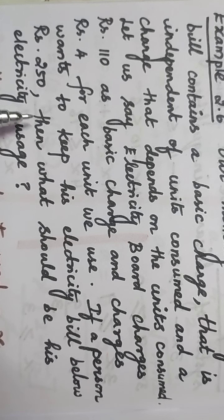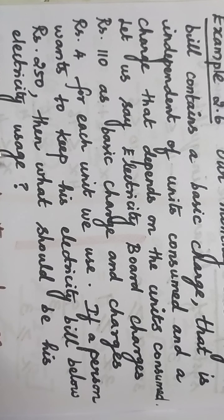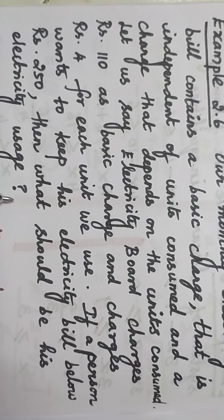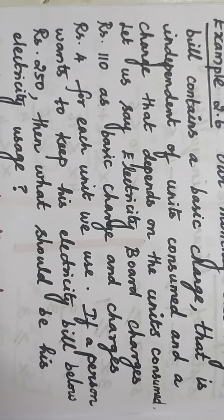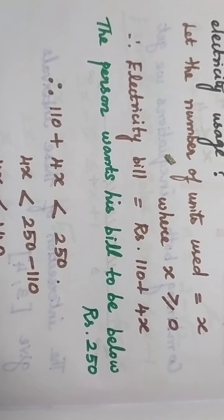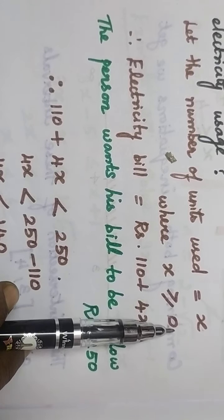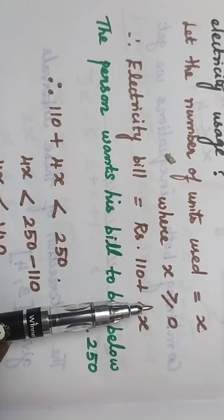We have to keep the electricity bill below Rs. 250, so we need to find how much he should use. Now we have to find the number of units. Let us assume the number of units is x, where x is greater than or equal to 0, since number of units will be positive.